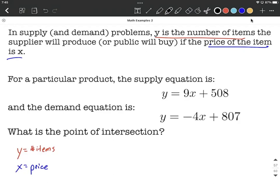So we're going to go ahead and set these equal to one another. So 9x plus 508 equals negative 4x plus 807. Set them equal, and now we have a linear equation.